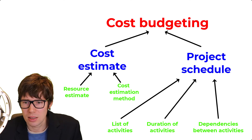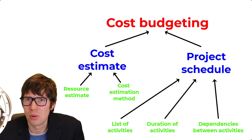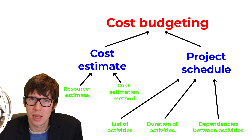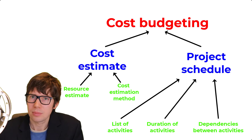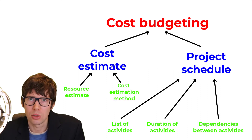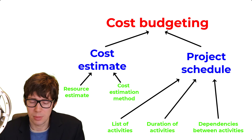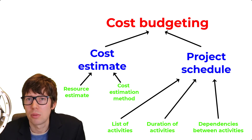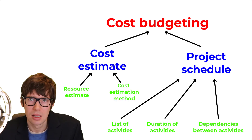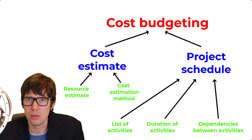To do cost budgeting, you need two things: the cost estimate (which requires the list of resources and quantities), and additionally, the project schedule. You can create a schedule using a network diagram or a Gantt chart. To make a network diagram, you need three inputs: a list of activities (usually identified through the Work Breakdown Structure), an estimation of the duration of each activity, and the logical relationships between activities — are they dependent or independent? If dependent, what kind: start-to-start, finish-to-finish, start-to-finish, or finish-to-start?